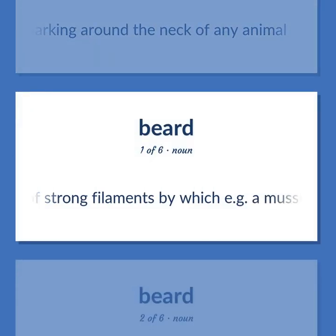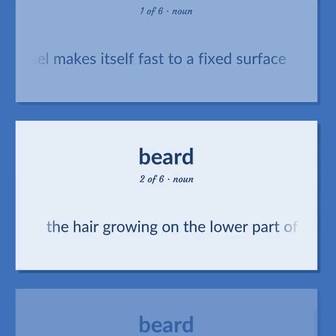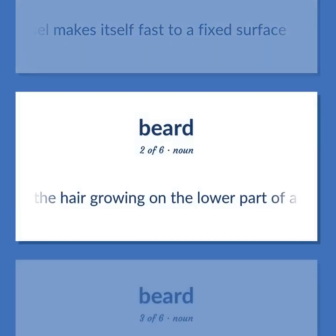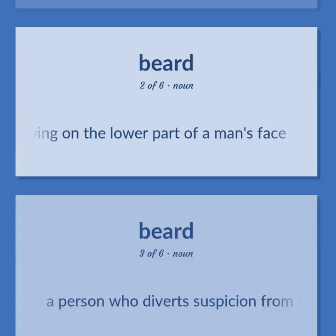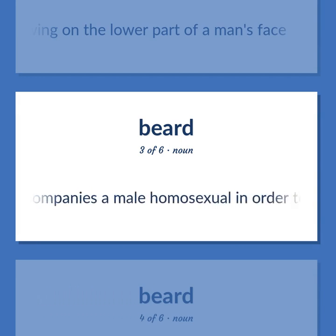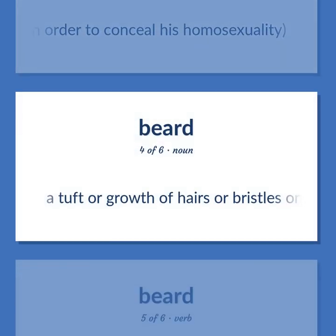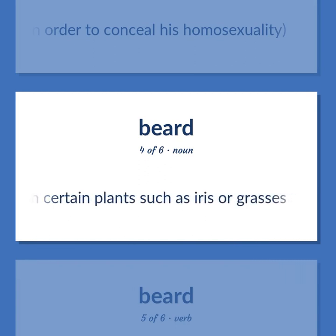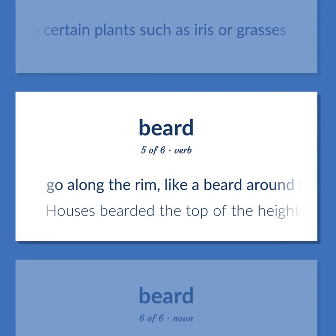BEARD: A zoological encircling band or marking around the neck of any animal. A tuft of strong filaments by which, e.g., a muscle makes itself fast to a fixed surface. The hair growing on the lower part of a man's face. A person who diverts suspicion from someone, especially a woman who accompanies a male homosexual in order to conceal his homosexuality. A tuft or growth of hairs or bristles on certain plants such as iris or grasses. Go along the rim, like a beard around the chin — 'houses bearded the top of the heights.'